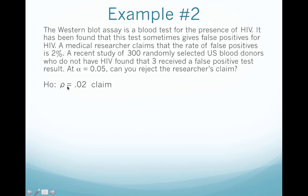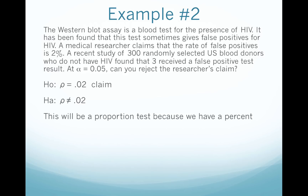Our alternative is the opposite: rho not equal to .02. Now we need to decide if this is going to be z, t, or proportion. Clearly, because we're dealing with rho, this is going to be proportion.